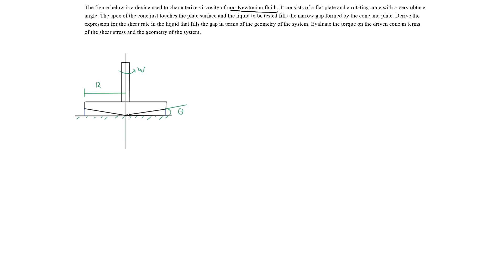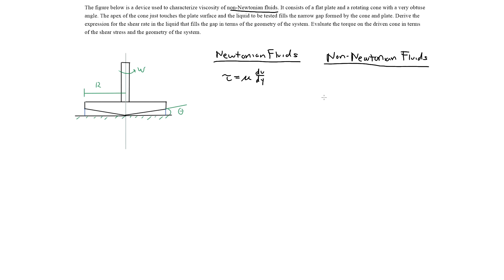The first thing we want to do is define Newtonian and non-Newtonian fluids. For a Newtonian fluid, the shear stress equals the viscosity of the fluid times the velocity gradient, du/dy — that's a linear relationship. Since we're looking at non-Newtonian fluids, the equation changes: the shear stress is defined as mu times (du/dy) to the nth power.